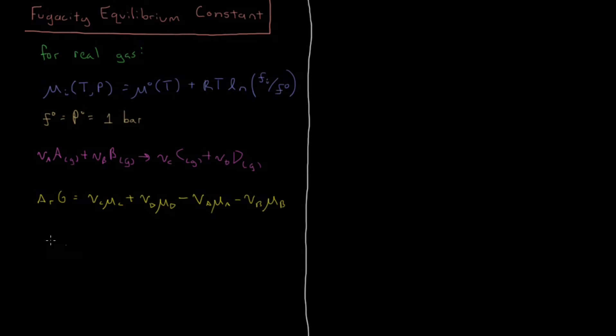And what we'll end up with is a very similar expression that the Gibbs energy change of reaction is equal to the standard Gibbs energy change of reaction, which comes from the standard part of the chemical potential, plus the part which depends on fugacity, or pressure, analogously for ideal gases, and that's RT log. And then we're going to have a reaction quotient here, or equilibrium constant.